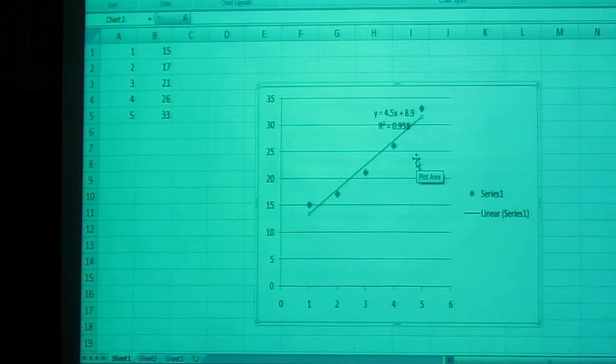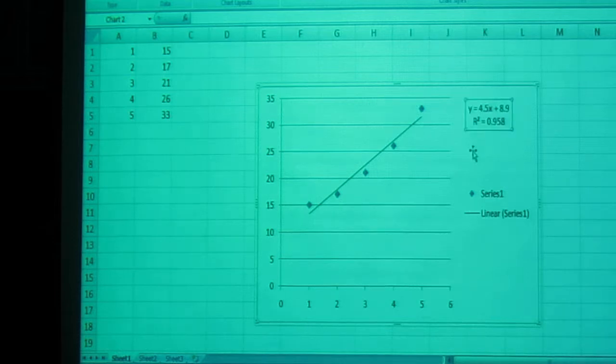And there's your line of best fit and its equation. You can click on the equation until the box appears, and move the box over so it's easier to see.